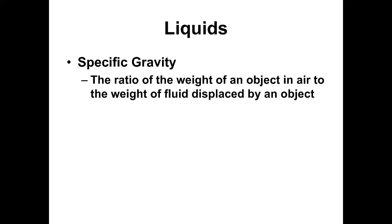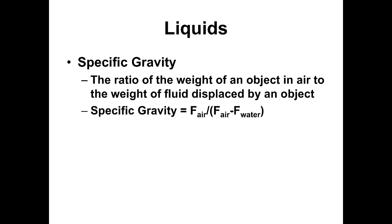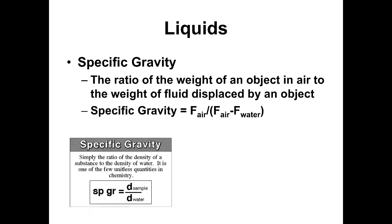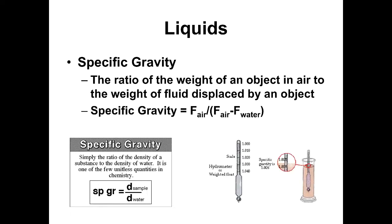Specific gravity is the ratio of the weight of an object in air to the weight of the fluid displaced by that object. It equals the weight in air divided by the weight in air minus the weight in water, which also equals the density of the sample divided by the density of water. A hydrometer is an instrument used to measure the density of certain fluids.